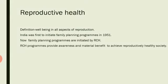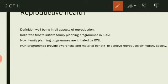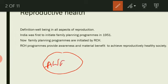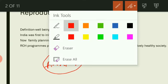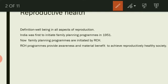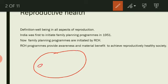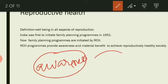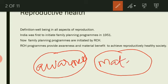The main objectives of Reproductive and Child Health Care programs are two: one objective is meant for awareness, and another objective is to provide material benefits to people.